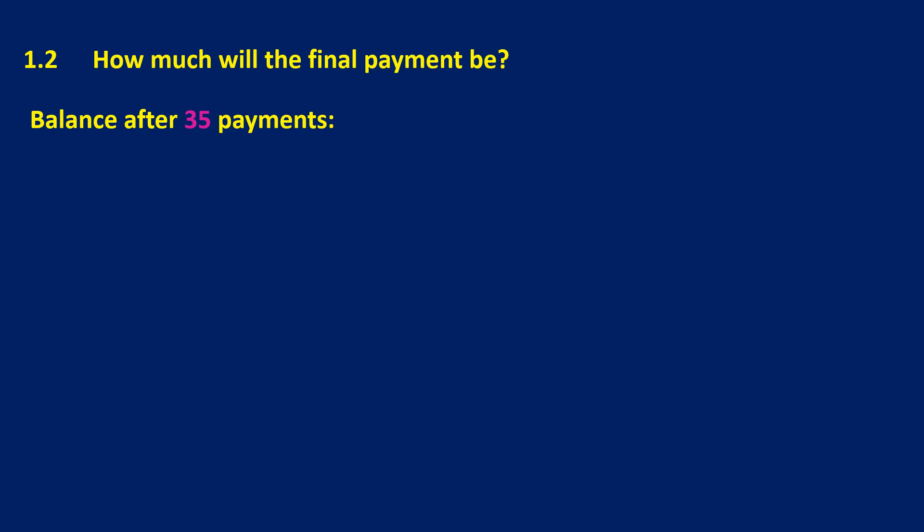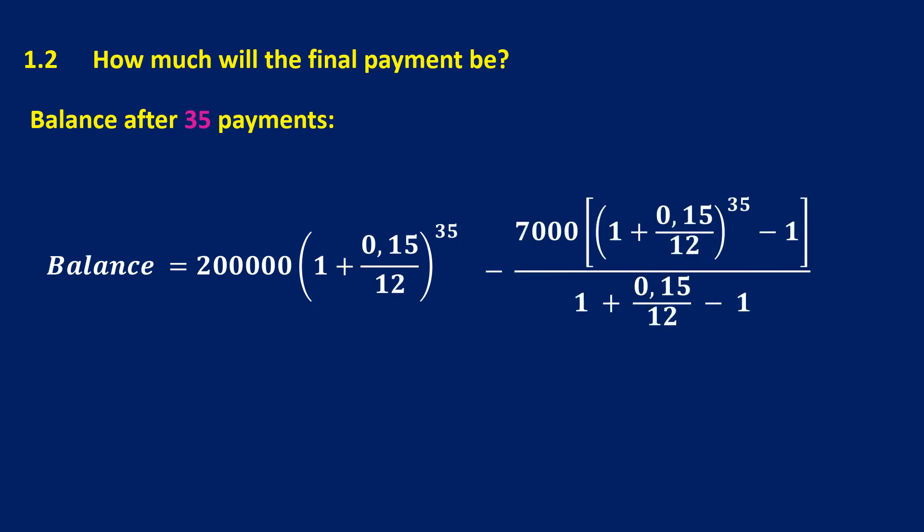Now, remember from previous videos that your balance outstanding is going to be the loan that you've had for 35 months minus the repayments that you've been making for 35 months. And remember, those repayments, you're going to use your future value formula, looking at in the future, after 35 payments, how much will I still owe? So those exponents are both going to be 35.